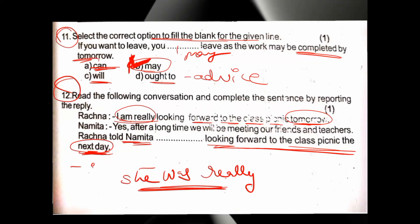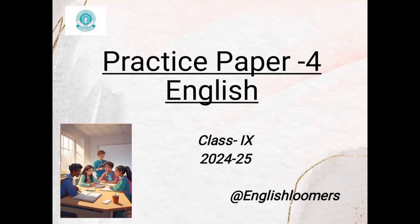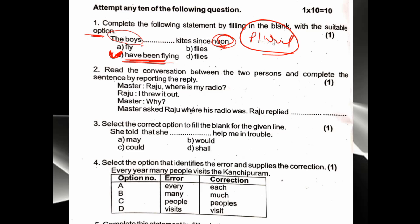I hope students you have found practice paper 3 clear with no doubts. Now we will solve practice paper 4. First question: 'The boys dash kite since noon.' Boys is a plural subject. The work has been continuing until now — 'since noon' indicates continuity — so we use present perfect continuous. The boys have been flying kites since noon. Plural subject takes 'have', so 'have been flying' is correct.